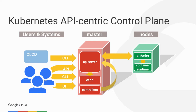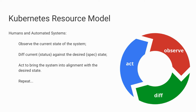Here's a diagram that is a little bit extended to include some other systems, but essentially users and systems like CI/CD and other automation all access the same APIs in the master. They talk to the API server, which is essentially the hub of the hub-and-spoke model that is Kubernetes. It persists data to etcd. Other systems — these controllers — are responsible for watching the API and taking action. The whole thing is essentially this big loop of observe, diff the current status against the desired state, and then continuously work to bring the system into alignment with the desired state.